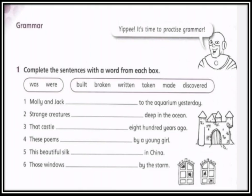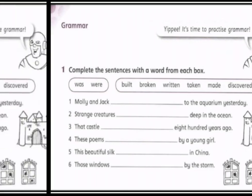Number six: those windows — windows اسم جمع عندنا — رح نستخدم فعل مساعد 'were' مع التصريف الثالث: were broken by the storm. Now my dear students, write down the answers on your book.